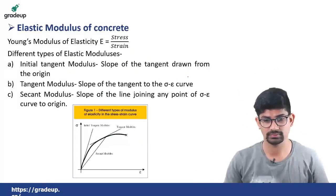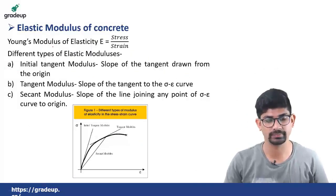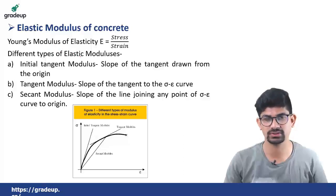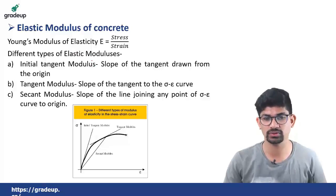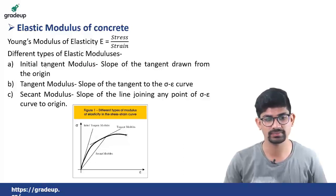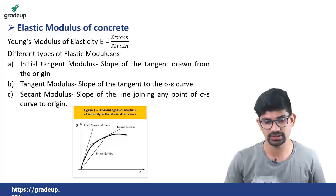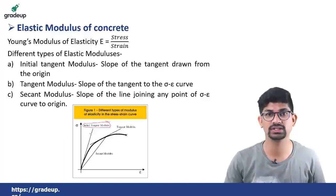The first topic is elastic modulus of concrete. Young's modulus of elasticity, as you know from strength of materials, is equal to longitudinal stress divided by longitudinal strain. For concrete, three different types of elastic modulus are defined. The first one is initial tangent modulus, which is the slope of the tangent drawn from the origin. As you can see from this figure, this is the initial tangent modulus drawn from the origin.